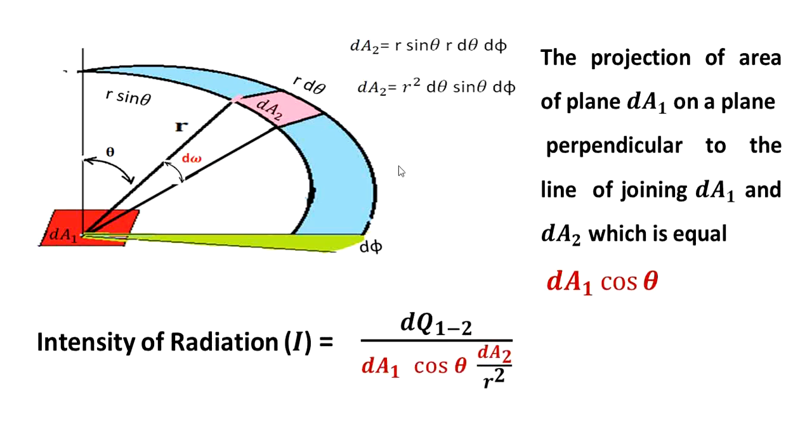Therefore, intensity of radiation, as we have told, this is per unit solid angle, per unit area dA_1 cos theta. dA_2 cos theta, r squared will cancel.